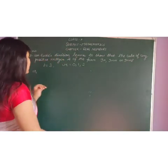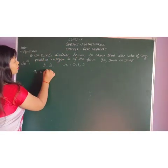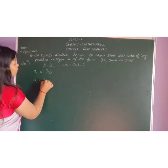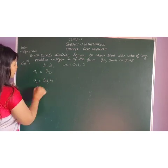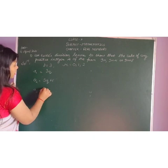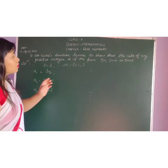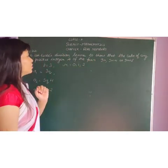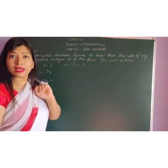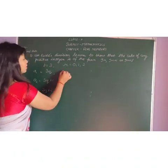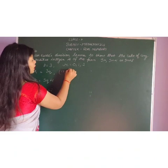Now see how we are doing it. Now A1 will be 3Q, A2 will be 3Q plus 1, and A3 will be 3Q plus 2. Now as you know that we have to show that a cube of any positive integer is of 9M, 9M plus 1, or 9M plus 8. So what we will do? We will find out the cube of A1, A2, and A3.